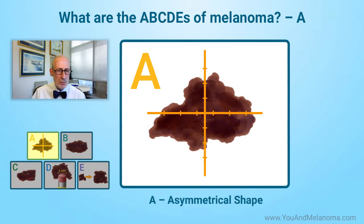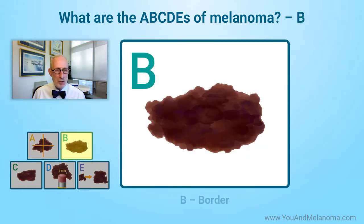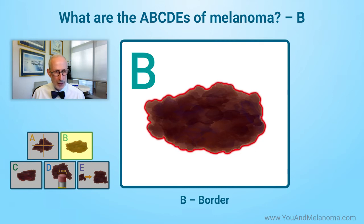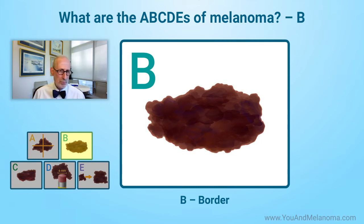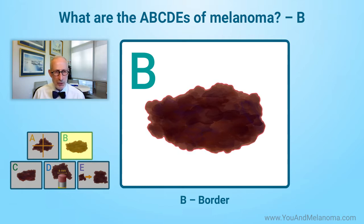The A is for asymmetry — meaning if you cut it in half, the two sides would be unequal. B is the border; it's kind of irregular, shaggy, and uneven. Most moles are pretty oval or rounded, regular, and symmetric, and well-defined — you can draw exactly where they begin and end. So if the borders are irregular, that raises some issues.